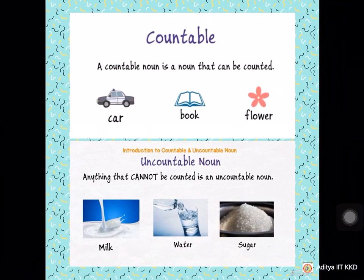A countable noun is a noun that can be counted. Examples: car, book, flower. An uncountable noun is anything that cannot be counted.